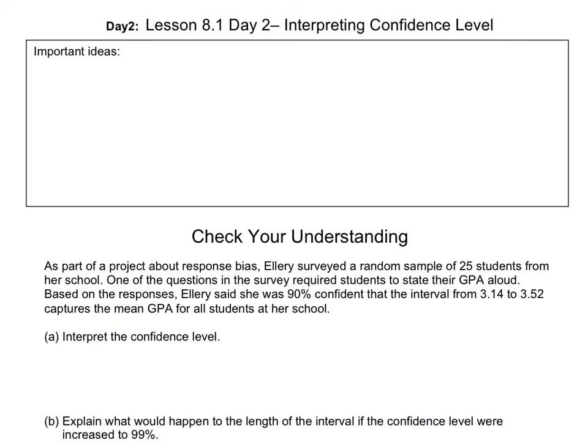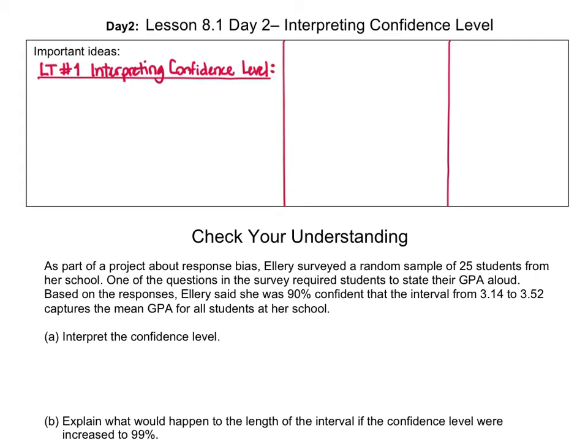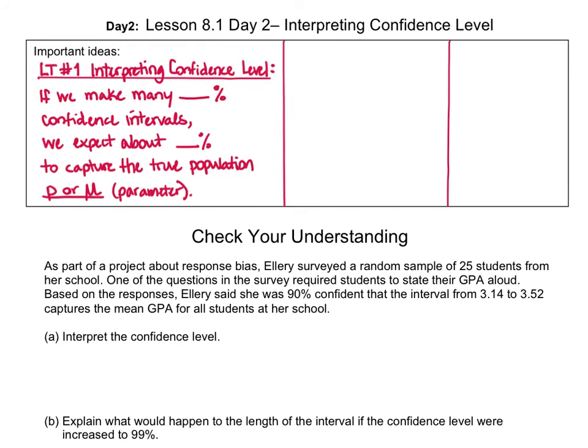Our first learning target was to interpret a confidence level in context. The confidence level is the approximate number of intervals that we expect are going to capture the true population value if we take many, many samples around which we build confidence intervals. Our next learning target is to describe how the sample size and confidence level affect the margin of error. A larger confidence level makes the interval wider — the margin of error increases. When we increased the sample size, the margin of error decreased, making the interval narrower.